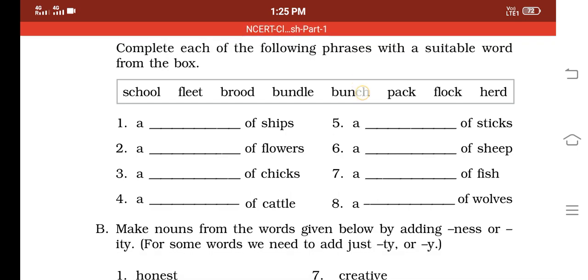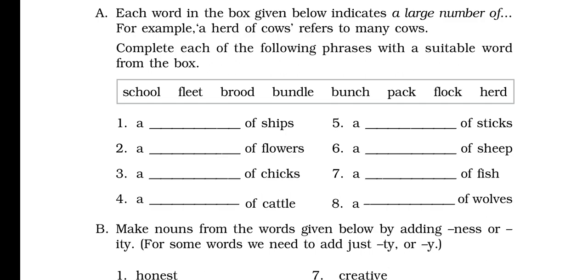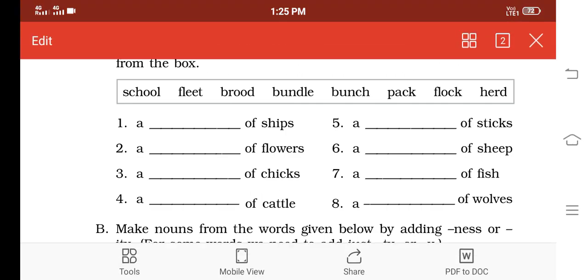A group of chicks. Chicks means small hen. A group of chicks, what do we call? Yes, brood. You write there 'a brood of chicks.' Then the fourth one: cattle. A group of cattle is 'herd of cattle.'